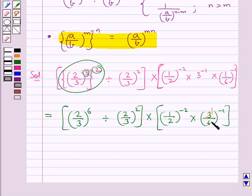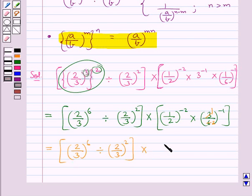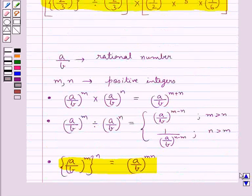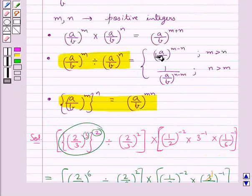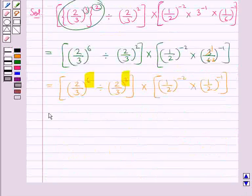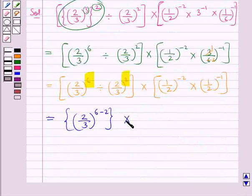Here, 3 times 2 equals 6, so we get 2 upon 3 whole to the power 6, divided by 2 upon 3 whole to the power 2, multiplied by 1 upon 2 whole to the power minus 2, multiplied by 1 upon 2 whole to the power minus 1. Now, to divide 2 upon 3 whole to the power 6 by 2 upon 3 whole to the power 2 — since 6 is greater than 2, that is m is greater than n — this expression equals a upon b to the power m minus n.